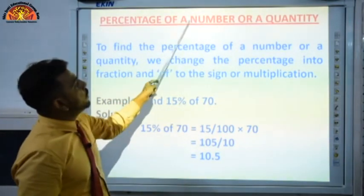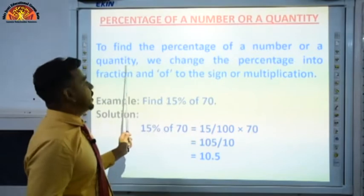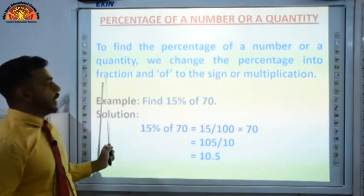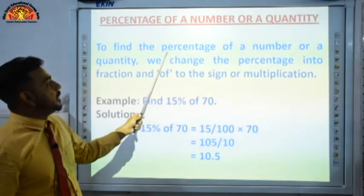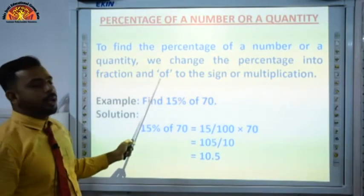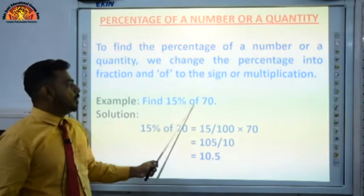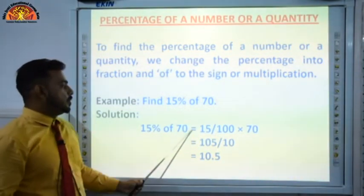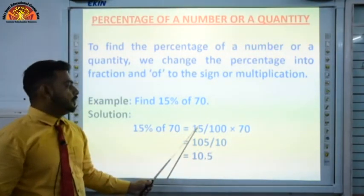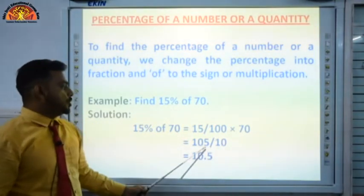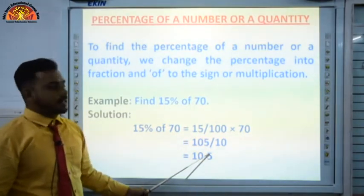Now let me discuss percentage of a number or a quantity. To find the percentage of a number, change the percentage into a fraction and replace 'of' with multiplication. Example: find 15% of 70 → 15/100 × 70. Cancel zeros — 15 × 7/10 = 105/10 = 10.5. This is the answer.